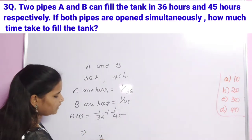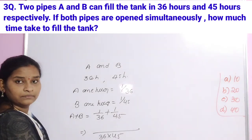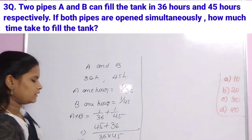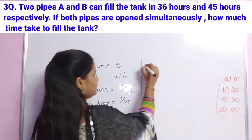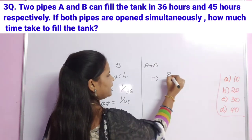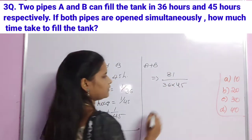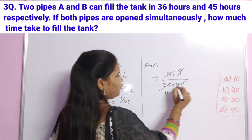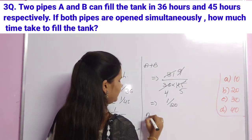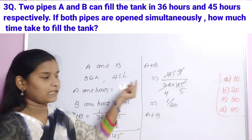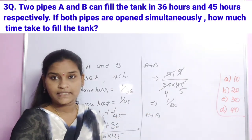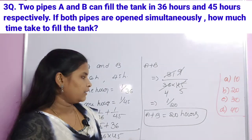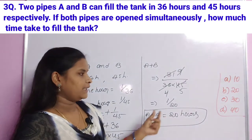LCM of 36 and 45: 36 into 45 simplifies. 45 plus 36 equals 81. So A plus B equals 81 divided by (36 × 45). Simplifying: 9 goes into both — 9 × 4 = 36 and 9 × 5 = 45 — giving 1/20. So with both pipes open, 1/20th of the tank fills per hour, meaning it takes 20 hours total. Option B is correct.